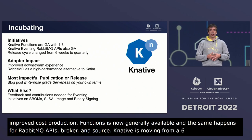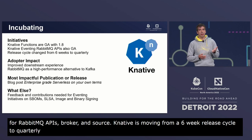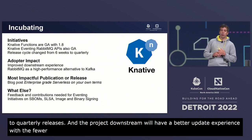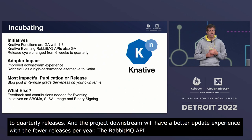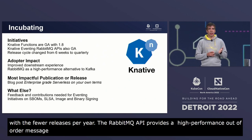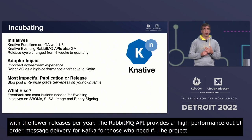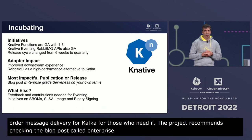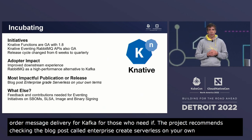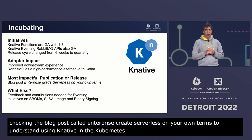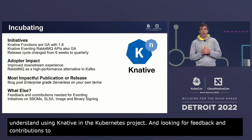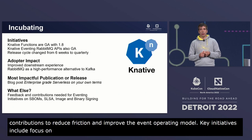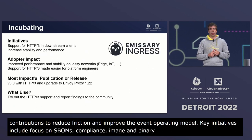On the adopter side, downstream vendors, OSS projects, and end users will have a better update experience with fewer releases per year. The RabbitMQ APIs provide a high-performance, out-of-order message delivery alternative to Kafka for those who need it. The project recommends checking the blog post called 'Enterprise Grade Serverless on Your Own Terms' to understand the value of using Knative. The project is also asking for feedback and contributions, with key initiatives including focus on SBOMs, license compliance, and image and binary signing.